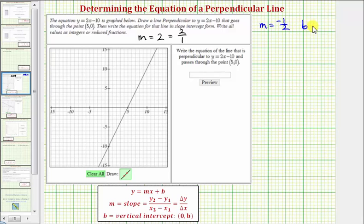So in order to find the equation of our perpendicular line, we now just need to find the vertical intercept b. Now let's go to our grapher and see if we can graph a perpendicular line passing through the point (5,0).